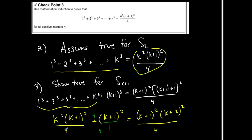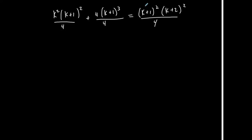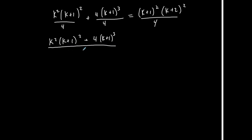That's the k squared, (k+1) squared part. And for k plus 1, we have (k+1) squared times (k+1+1), which is (k+2), squared over 4. So bringing both terms together over 4, I have k squared times (k+1) squared plus 4 times (k+1) to the third, all over 4. And that's supposed to equal (k+1) squared times (k+2) squared over 4.